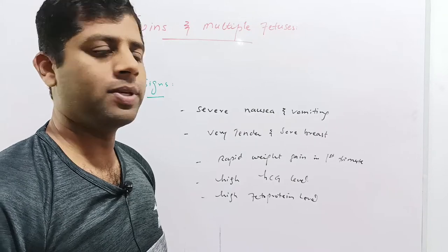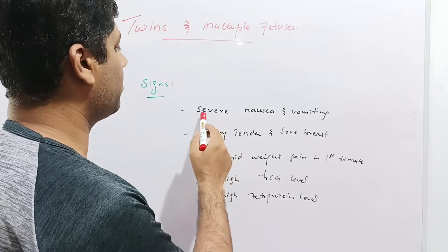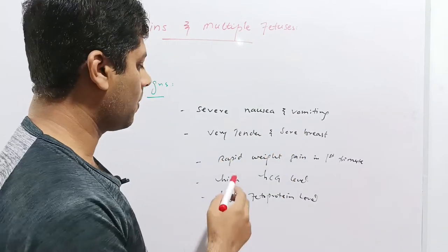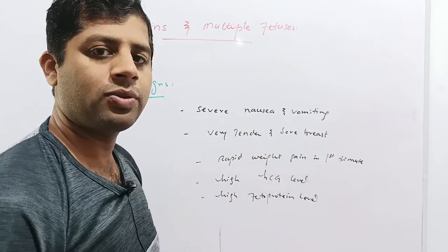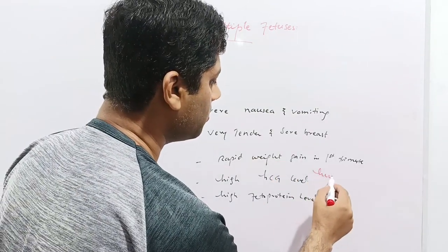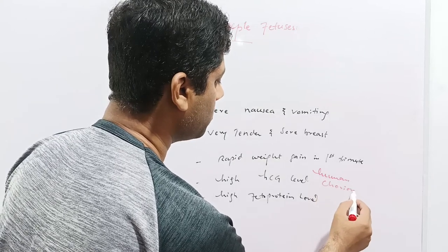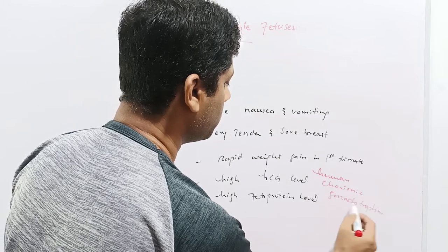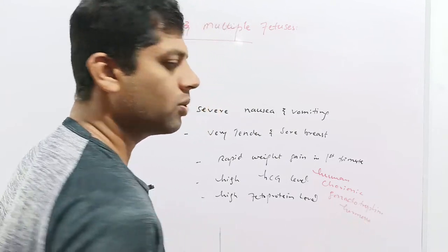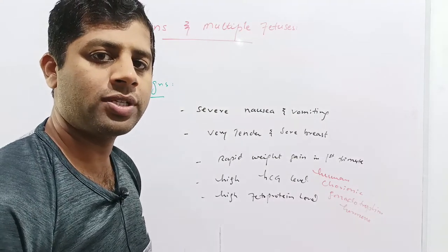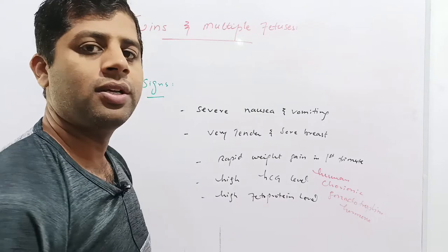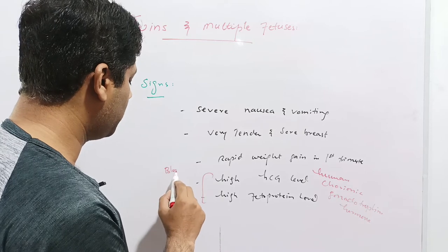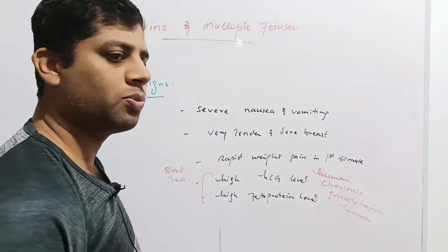Now we'll discuss the signs of twins and multiple pregnancies. They bear the same signs of severe nausea and vomiting. The woman has very tender and sore breasts, and there is rapid weight gain in the first trimester. The human chorionic gonadotropin (HCG) hormone level is highest in multiple fetuses and twins. There is also a high alpha-fetoprotein level in the blood, and both of these quantities can be determined by a blood test.